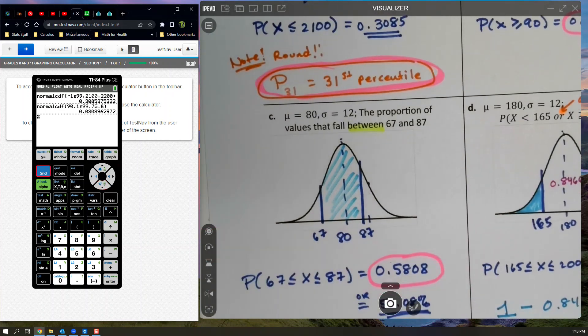Down here. These ones are nice. We like the between ones. They're easy because they don't involve that E99 business. So we're just going to say 67. We're going to say 87. We're going to say 80 and 12. There you have it.